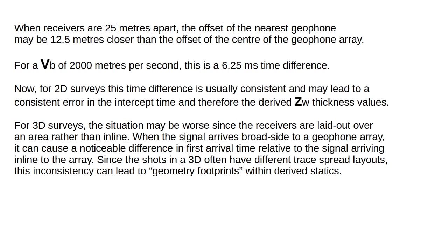When the signal arrives broadside to a geophone array, it can cause a noticeable difference in first arrival time relative to the signal arriving in line to the array. Since the shots in a 3D survey often have different trace spread layouts, the inconsistency can lead to geometry footprints within the derived statics.